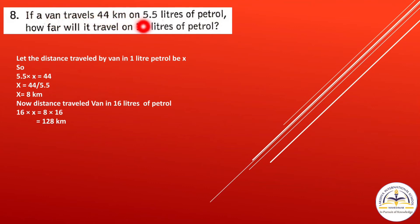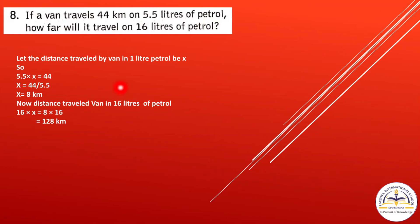Question 8: If a van travels 44 kilometers on 5.5 liters of petrol, how far will it travel on 16 liters? Let the distance per liter be x. So 5.5 times x equals 44, giving x equals 44 divided by 5.5 equals 8 kilometers per liter. For 16 liters: 8 times 16 equals 128 kilometers.